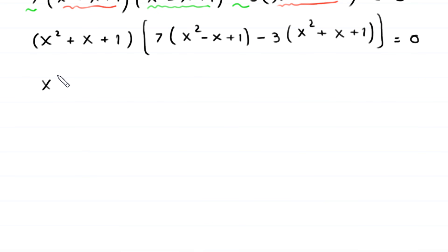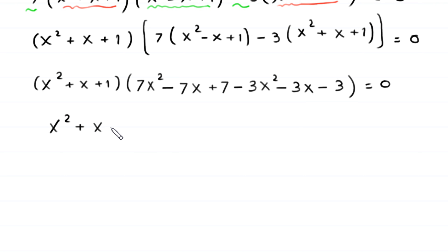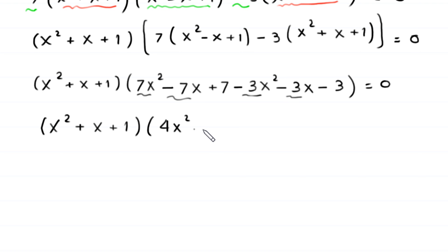Distributing inside the bracket: 7 gives 7x² − 7x + 7, and distributing −3 gives −3x² − 3x − 3. Combining like terms: 7x² − 3x² = 4x², −7x − 3x = −10x, and 7 − 3 = 4. So the bracket simplifies to 4x² − 10x + 4.